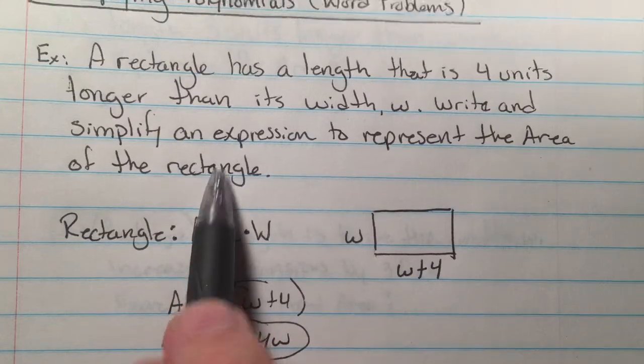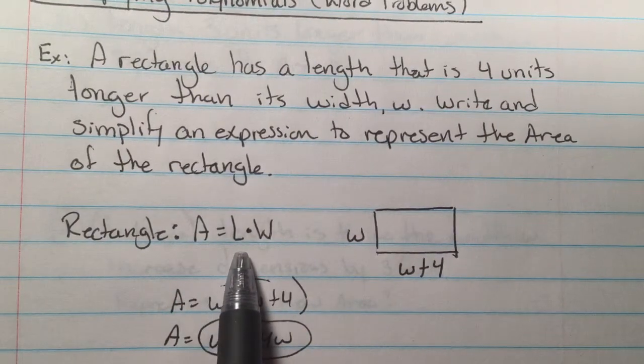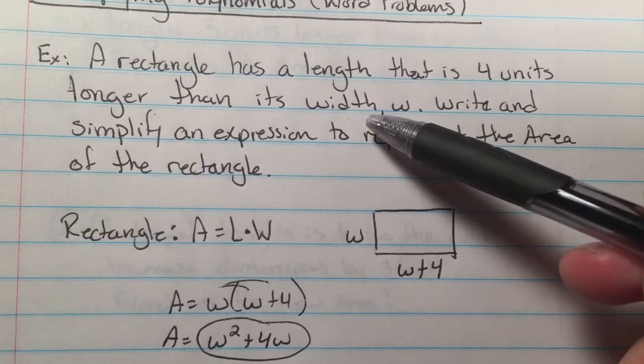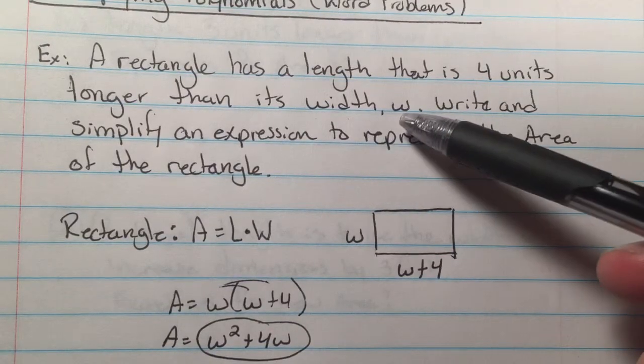The area of a rectangle is length times width. Well, what was the length? It was four units longer than the width. What was the width? W.